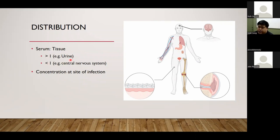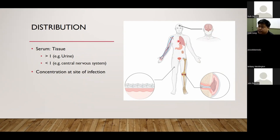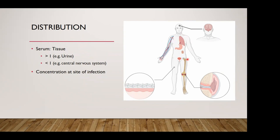Bringing this back to infectious diseases: knowing the distribution of individual drugs is important because infections can occur at all these different sites. In the CNS we can have meningitis or ventriculitis; in the lungs, pneumonia; in the bones, osteomyelitis. Whether a drug distributes to a particular tissue helps us understand whether it will be a viable option to treat an infection in that space.